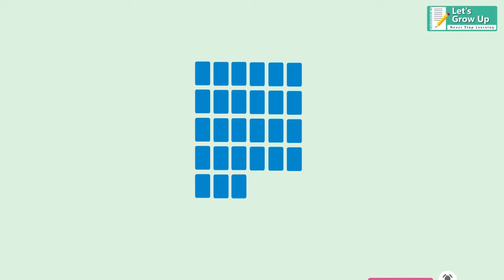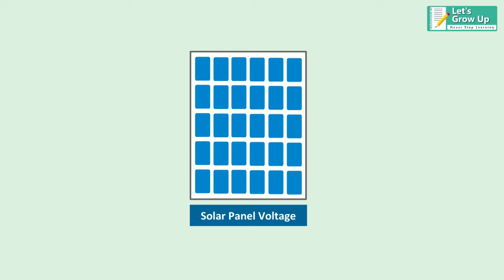The solar panel voltage can be increased by increasing the number of solar cells. For example, 30 solar cells connected in series will produce an output of 15 volts. A combination of solar panels connected together is known as solar array.